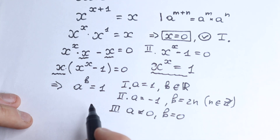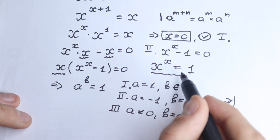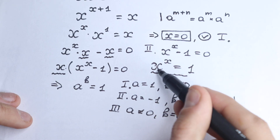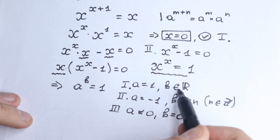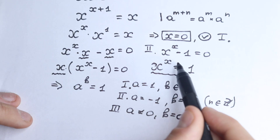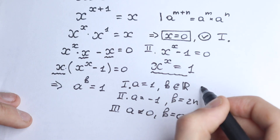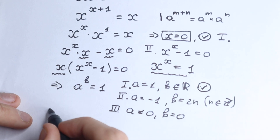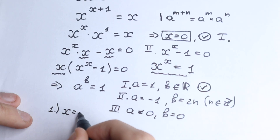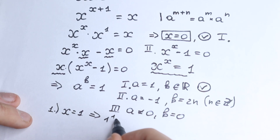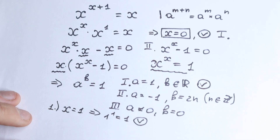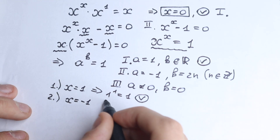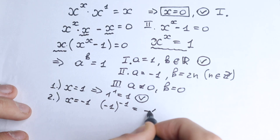For our equation x to the power x equals one, let's check all three cases. First: if x equals one, then we have one to the power one equals one, which is absolutely correct — so x equals one is a valid root. Second: if x equals minus one, then we have minus one to the power minus one equals minus one, which is wrong, so we discard this root.